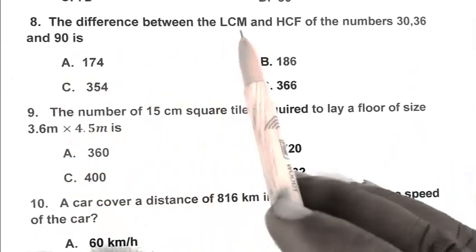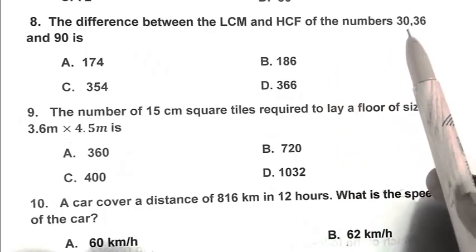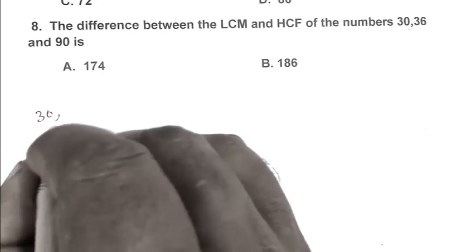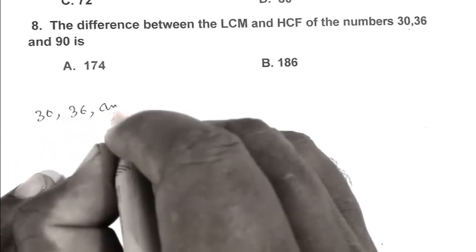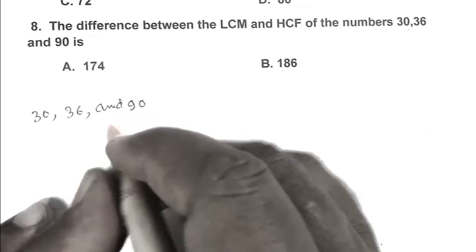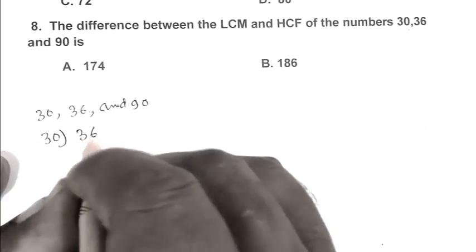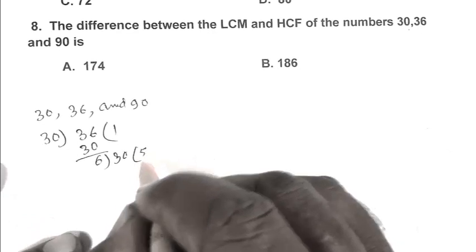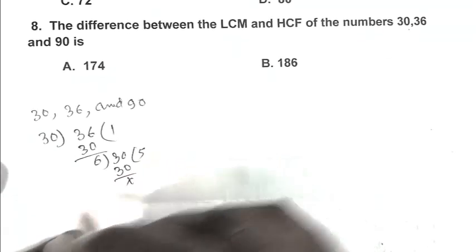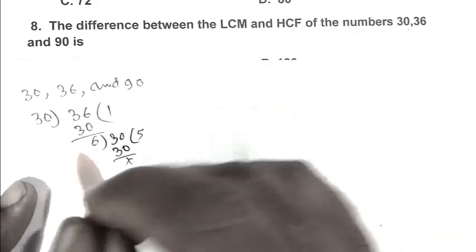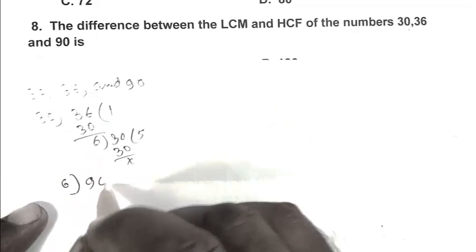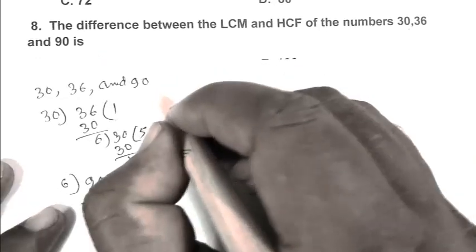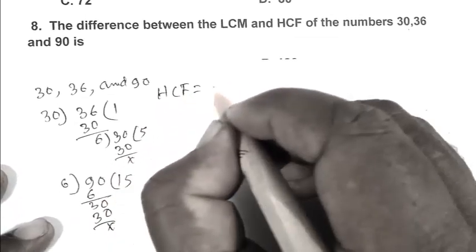Question number 8. The difference between the LCM and HCF of the numbers 30, 36, and 90 is? The numbers are 30, 36, and 90. First we calculate HCF by dividing: 30, 36, and 90 by 6. The HCF equals 6.